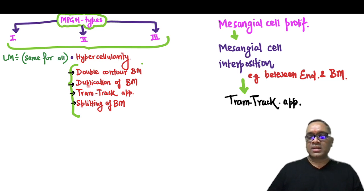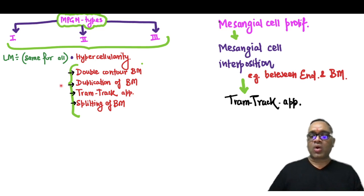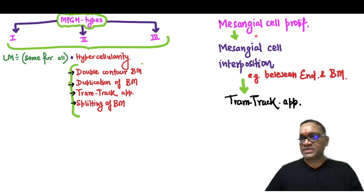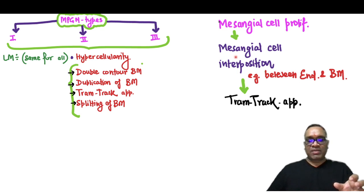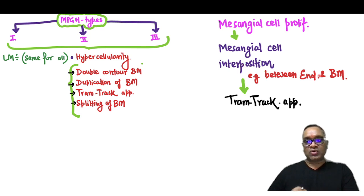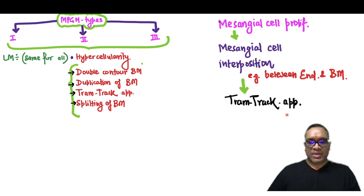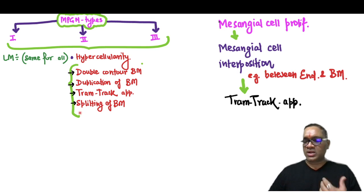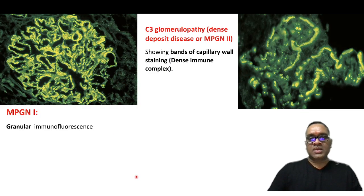All MPGN types share the same light microscopy findings: hypercellularity and double contour basement membrane — also called duplication or tram track appearance or splitting of the basement membrane. This is due to mesangial cell proliferation, where mesangial cells proliferate and come in between the endothelium and the basement membrane. This interposition of the mesangium between the endothelium and basement membrane gives rise to the tram track appearance.